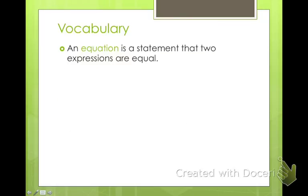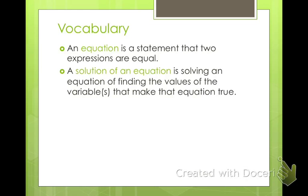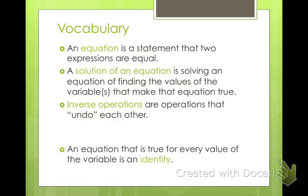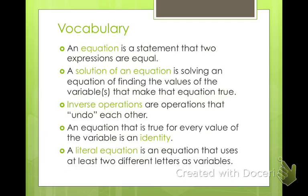Our vocabulary. First word: an equation is a statement that two expressions are equal, so they include an equal sign. The solution of an equation is to solve for the variables and find a single value that makes the equation true. Inverse operations are operations that undo each other — the inverse of addition is subtraction, and the inverse of division is multiplication. An equation that's true for every value — meaning you can put in any value and it'll always be true — is called an identity. A literal equation is an equation that uses at least two different letters as variables.